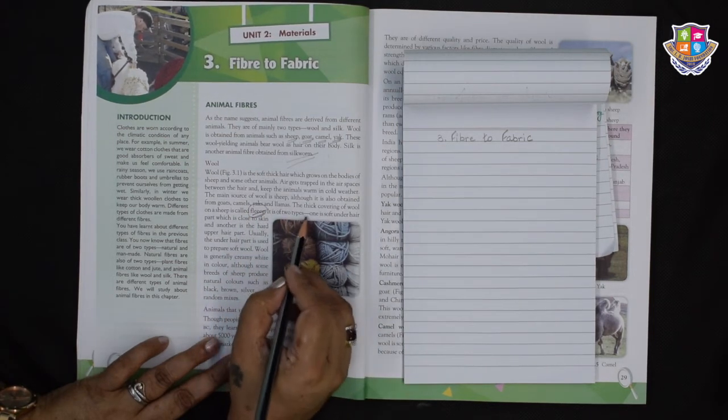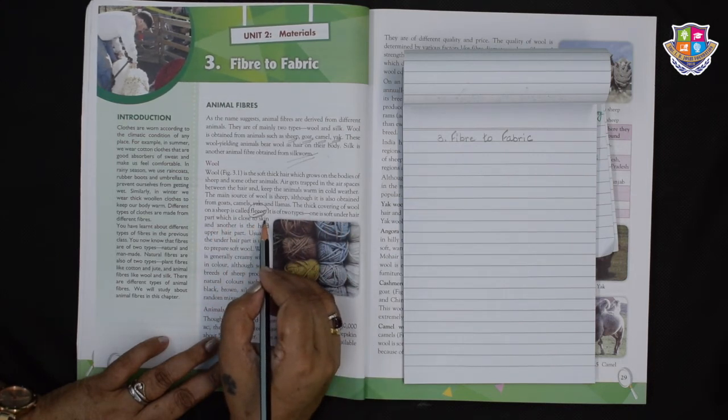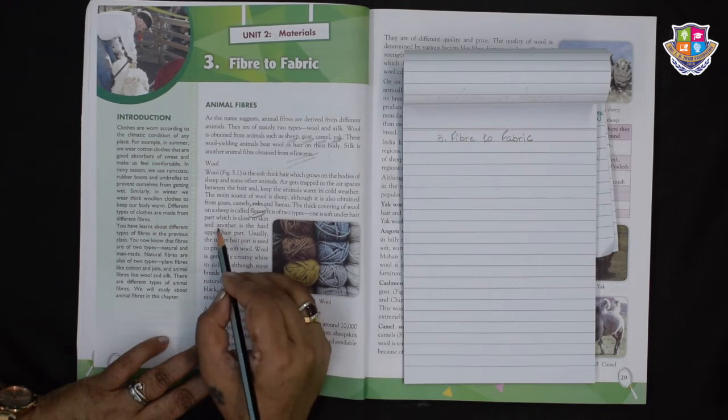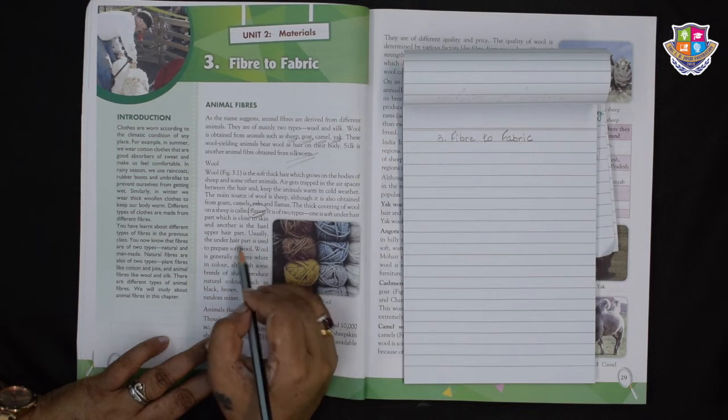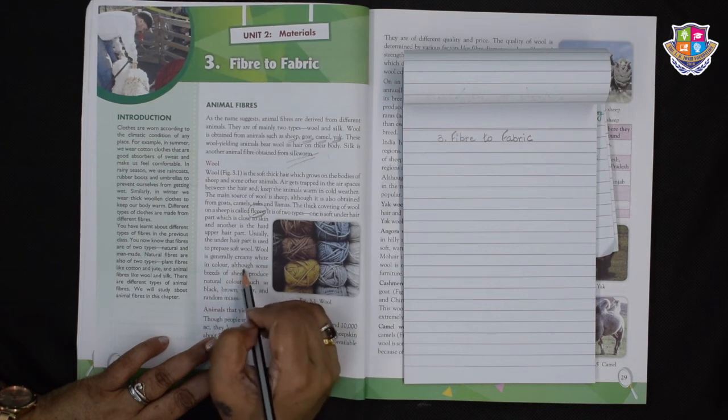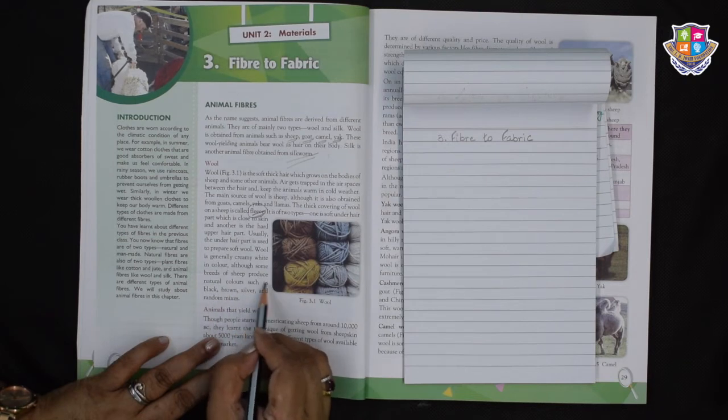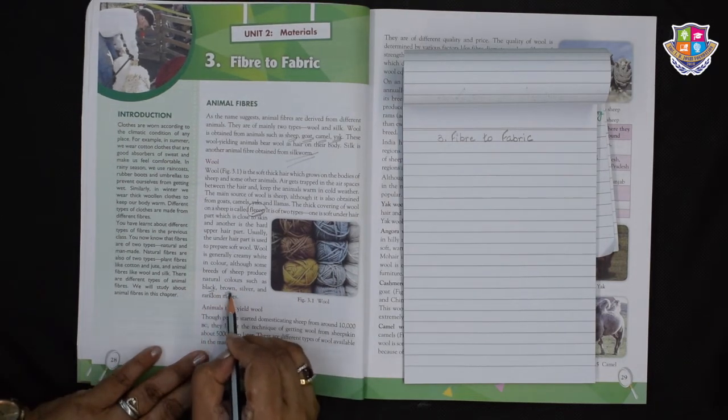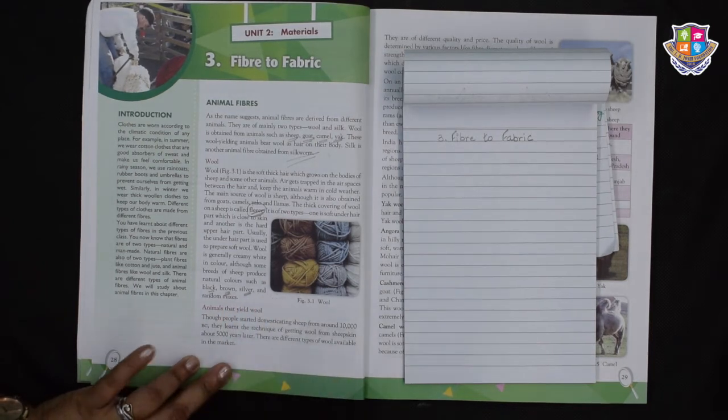One is soft under hair part which is close to the skin and another is the hard upper hair part. Usually the under hair part is used to prepare soft wool. Wool is generally creamy white in colour, although some breeds of sheep produce natural colours such as black, brown, silver and random mixes.